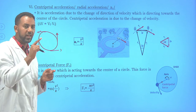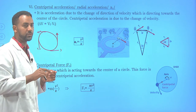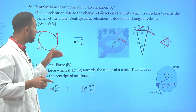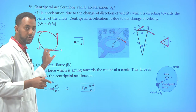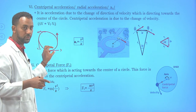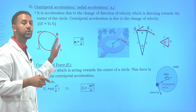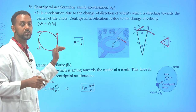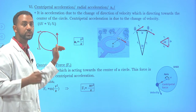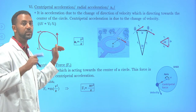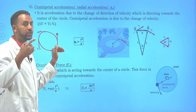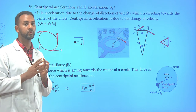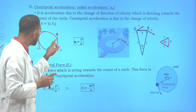The direction changes at every point, but the magnitude remains constant. For a uniform circular motion, the speed is constant. It is possible to say the magnitude of velocity is constant, but the direction changes — so the velocity itself is not constant.